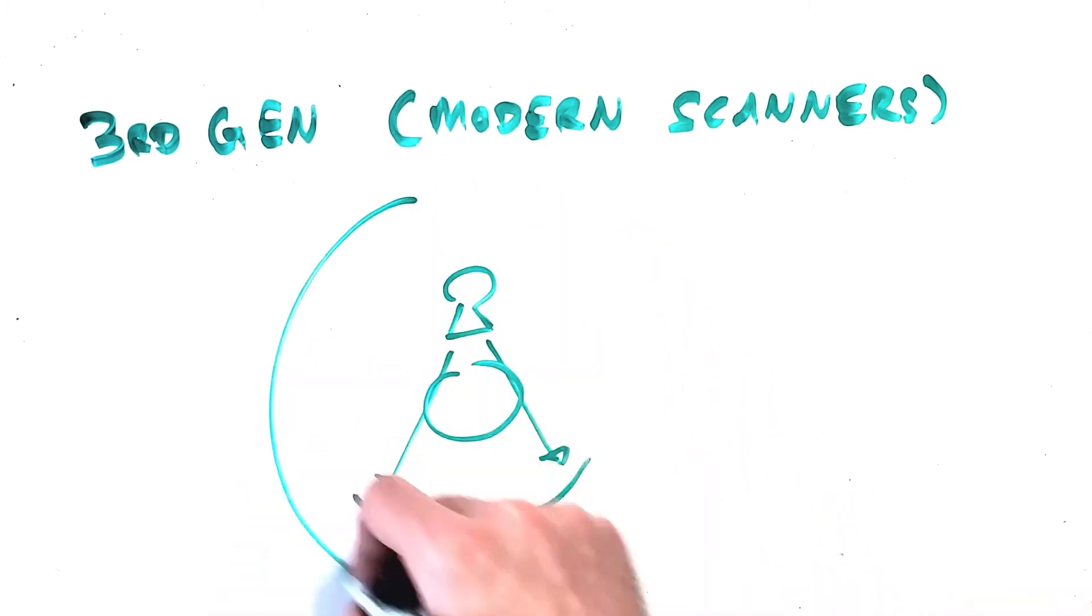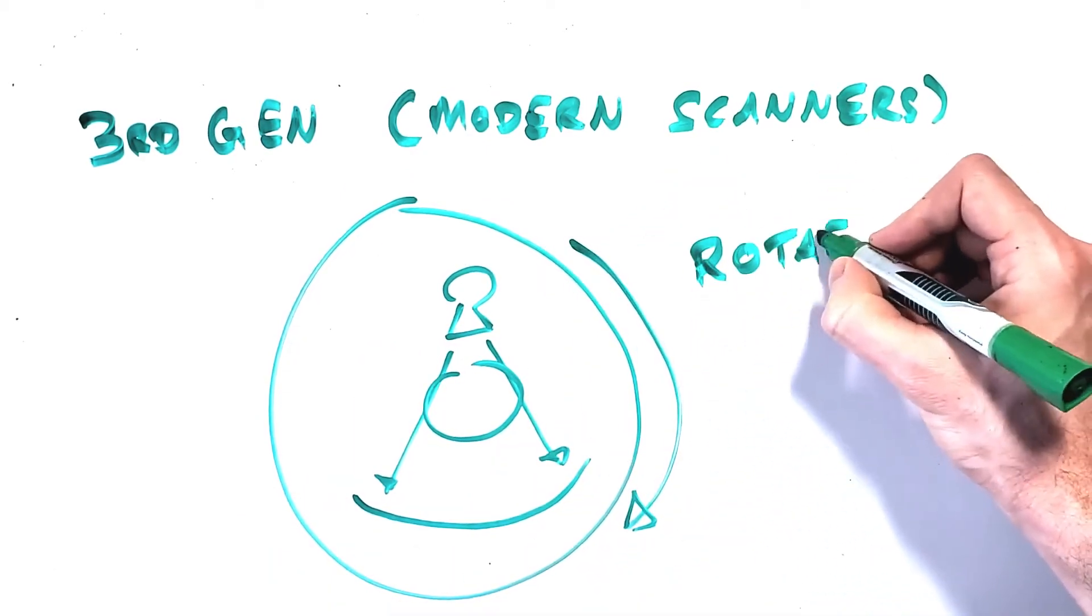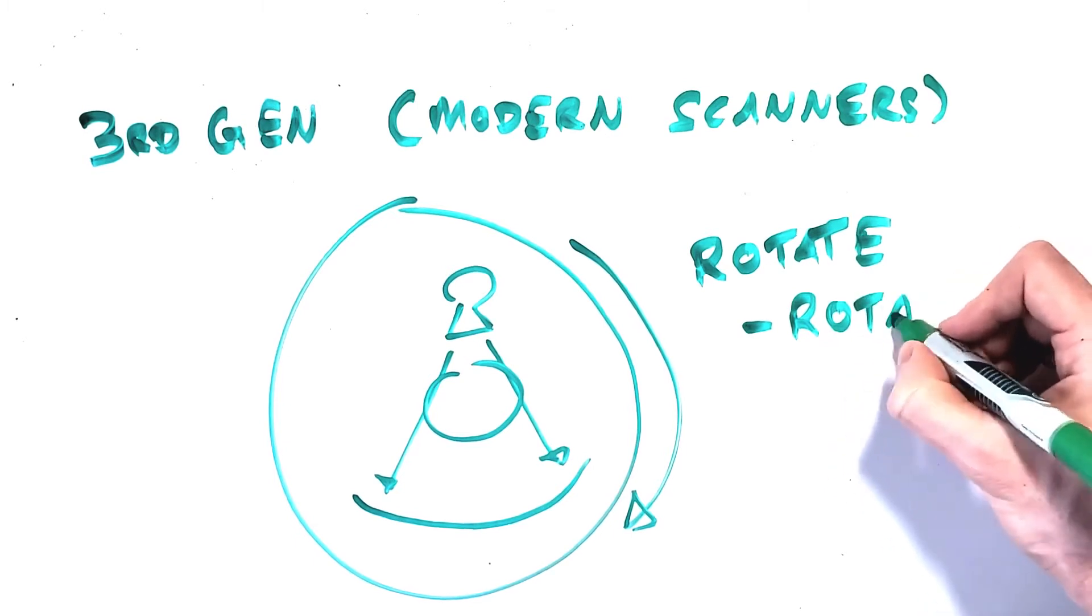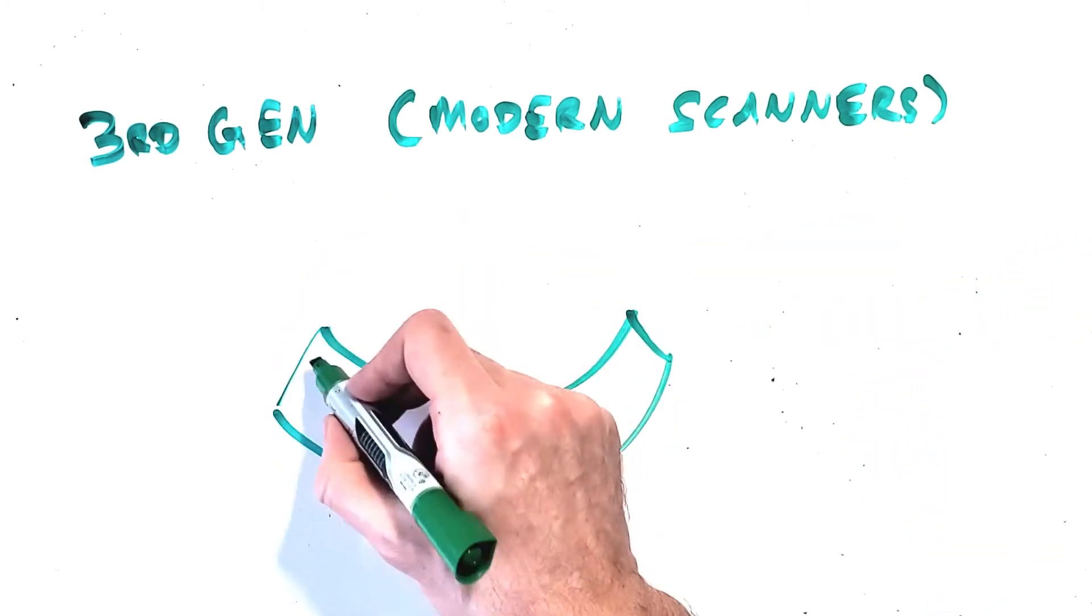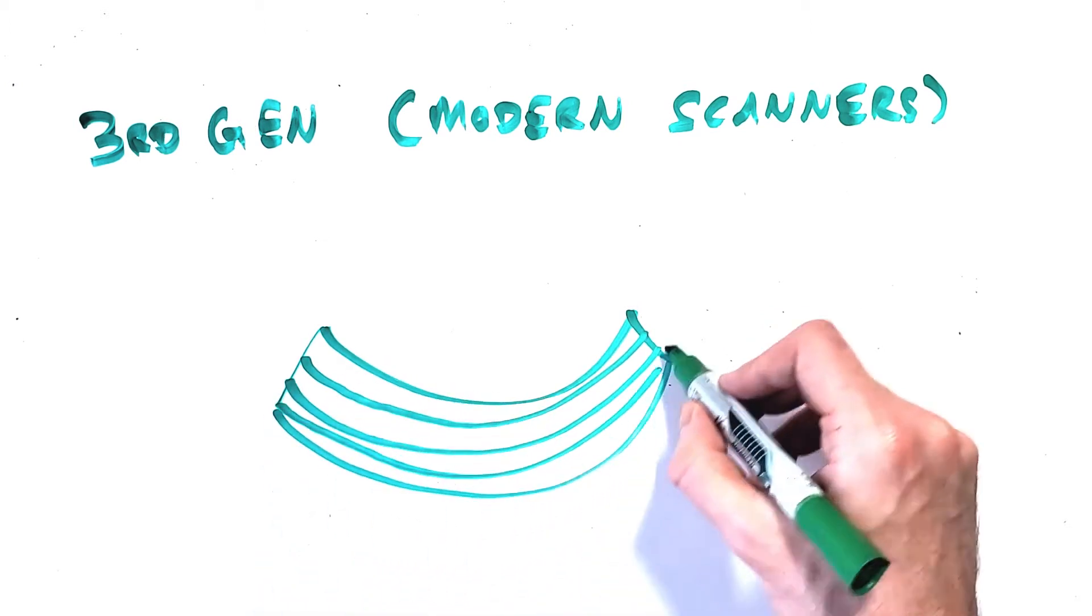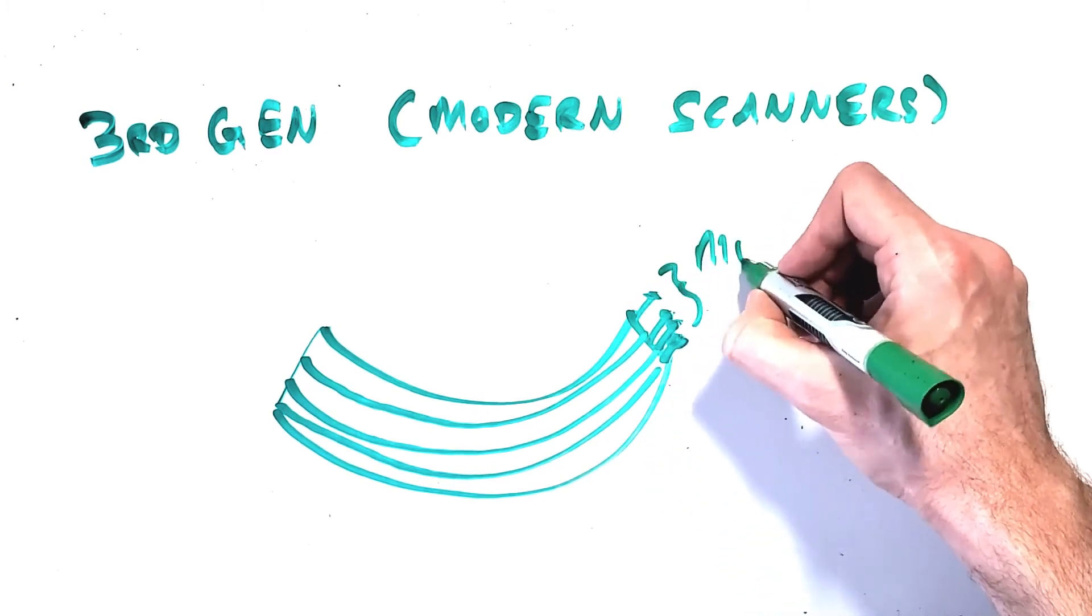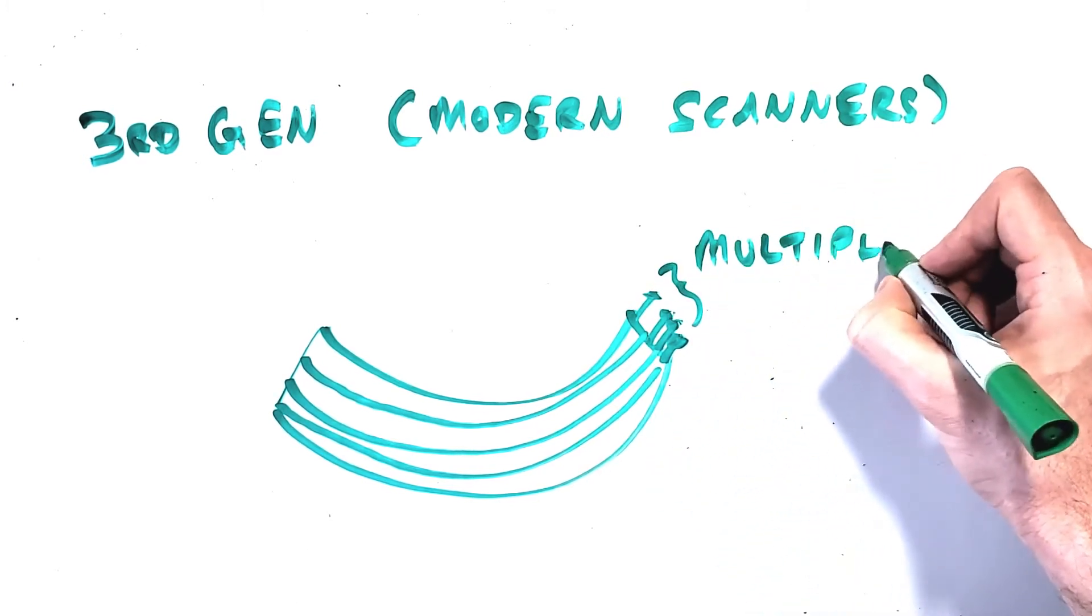We've upgraded the single slit-shaped fan to a thicker fan beam exposing a multi-row detector, where the detector, instead of being a single row of detector elements, is now composed of multiple rows of detector elements, so it looks more like a curved version of a conventional digital radiography detector, just much wider than it is long.